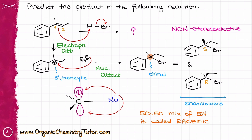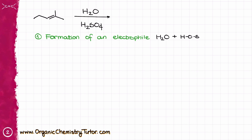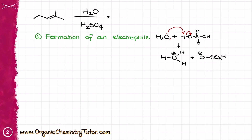Do I always get a pair of enantiomers? Actually, no. Let's look at this next molecule. For catalytic hydration, water is not electrophilic enough, so the first step is formation of the electrophile: water reacts with sulfuric acid H₂SO₄ in a proton transfer where water gets protonated, giving me the oxonium ion H₃O⁺ and the conjugate base of sulfuric acid, HSO₄⁻.